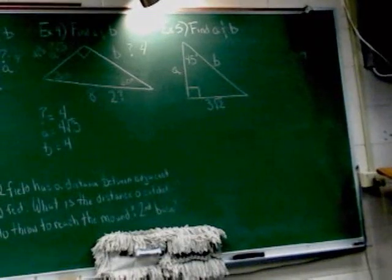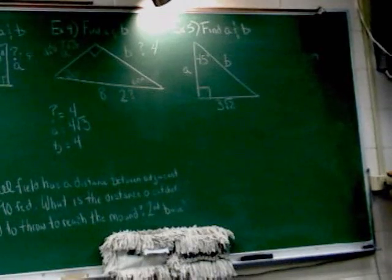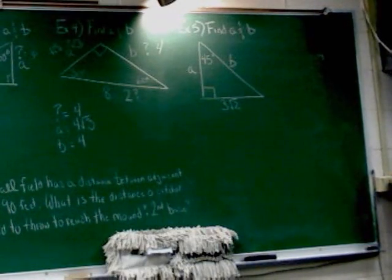All right, example 5. One more, find A and B. This one, you can see we've got a 45 and a 90, so the other angle obviously has to be 45 degrees.